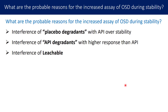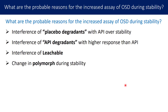The third probable reason is interference of leachables. There is a possibility that leachables from the container closure system are observed during the stability study and unfortunately interfere with the quantitation of the API, leading to higher response or higher percent assay.